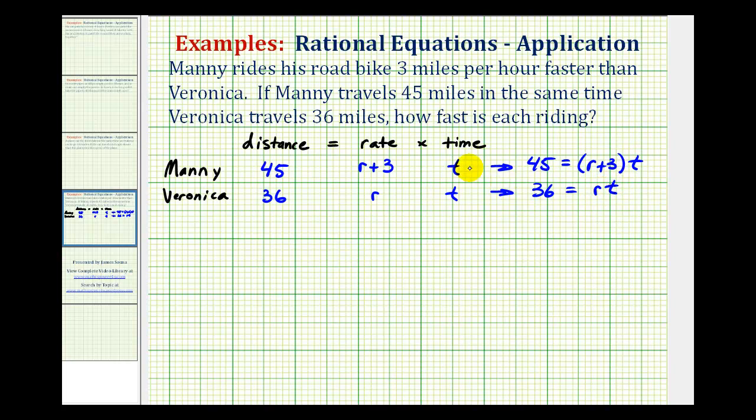Now the key to solving this problem is to recognize that these two t's are equal to each other. So we're going to take both of these equations now and solve them for t. So to solve this equation for t, we'll divide both sides by the quantity r plus three. This simplifies to one. So we have t equals 45 divided by the quantity r plus three.